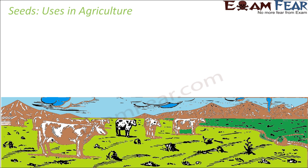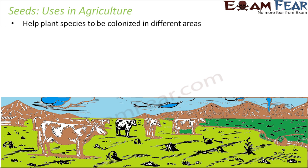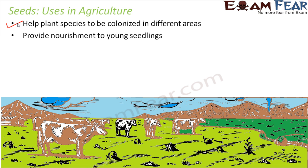Seeds are extremely significant because they are useful in agriculture — they help us grow a lot of plants. They help plant species to be colonized in different areas. Seeds are portable and can be transported from one place to another. If you want to grow crops in a particular area, you can just plant the seeds there and get a lot of plants.